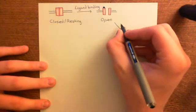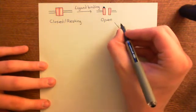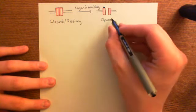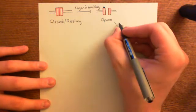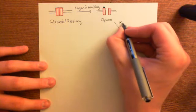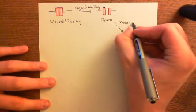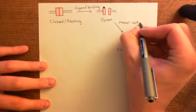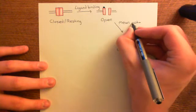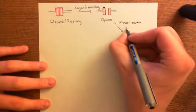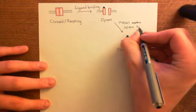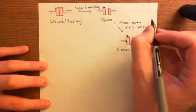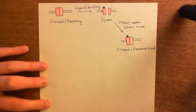Even though it is probabilistic, we can calculate an average amount of time it takes to go from the open to the closed/desensitized state. This is known as the mean open time for the glycine receptor. That covers the opening kinetics of the glycine receptor.